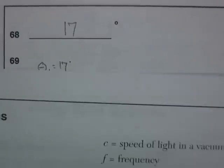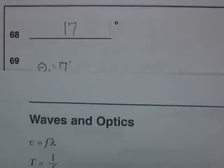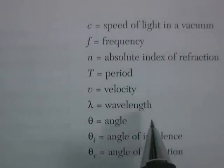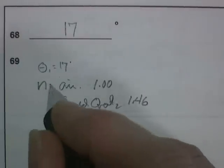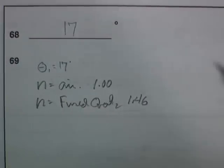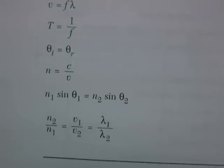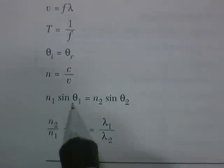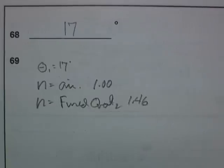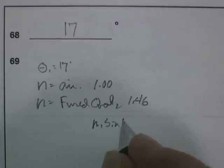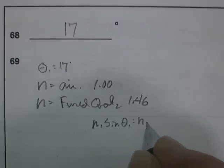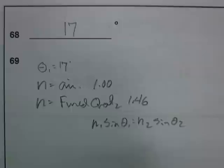If I go to my waves and optics equations, I find absolute index of refraction. This is n for air and n for fused quartz. I've got this equation that says n1 sin θ1 equals n2 sin θ2. I need to write that down: n1 sin θ1 equals n2 sin θ2.